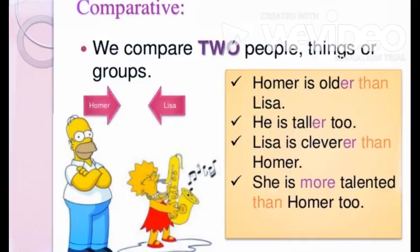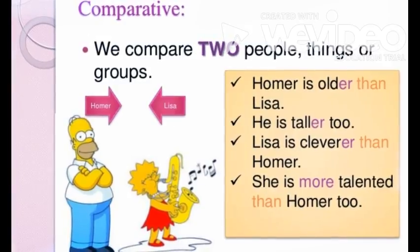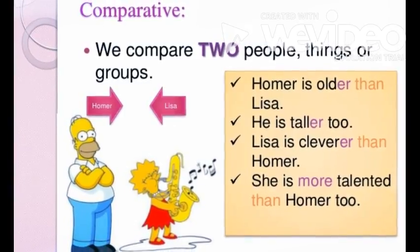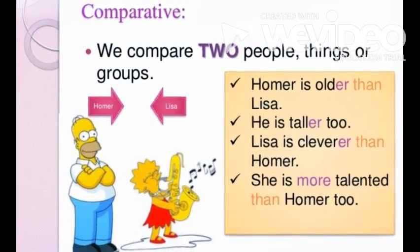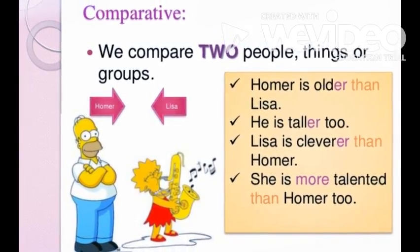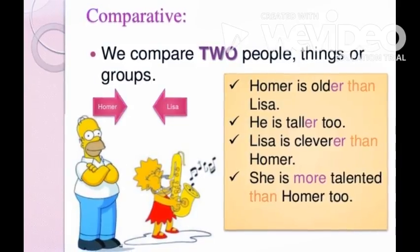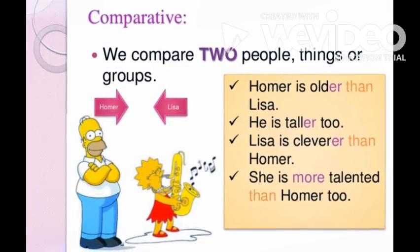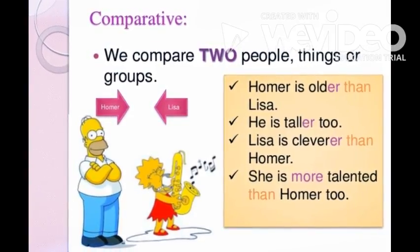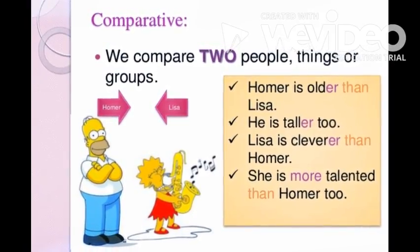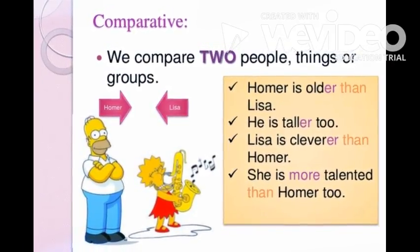Comparative adjectives. We compare two people, things, or groups. Woman is older than Lisa. She is taller too. Lisa is clearer than Roma. She is more talented than Roma too.